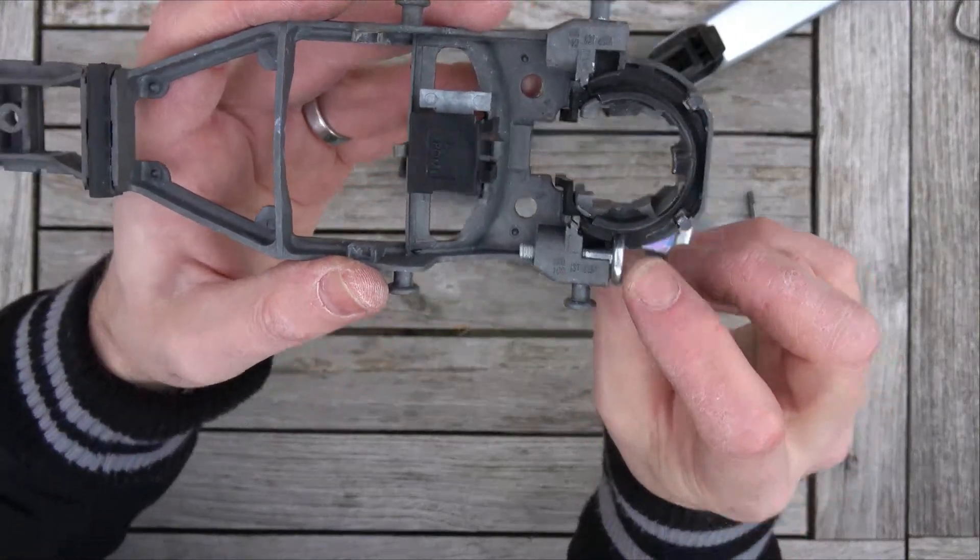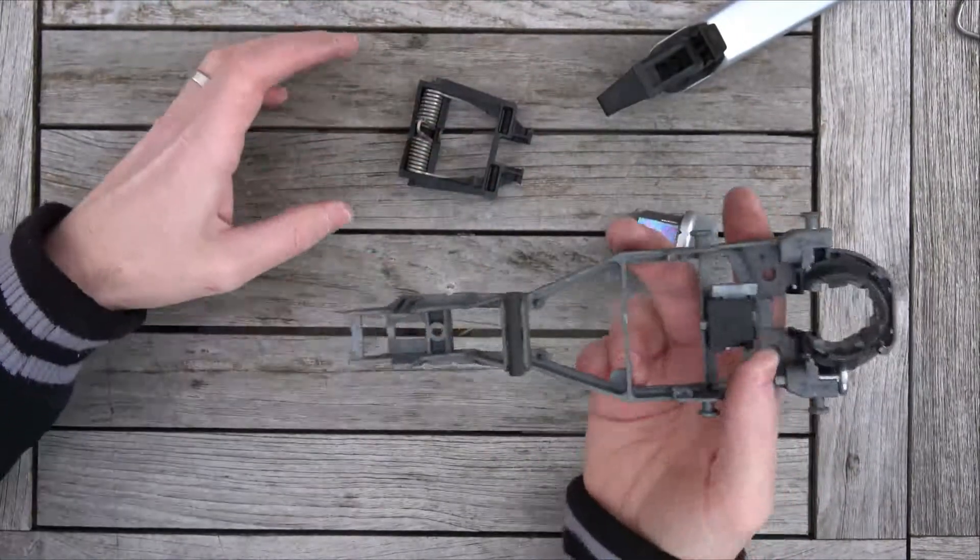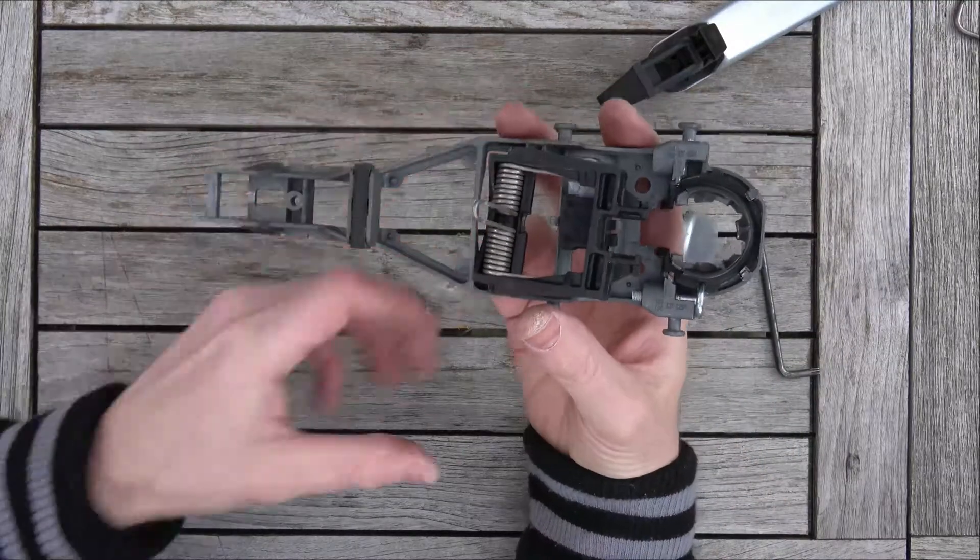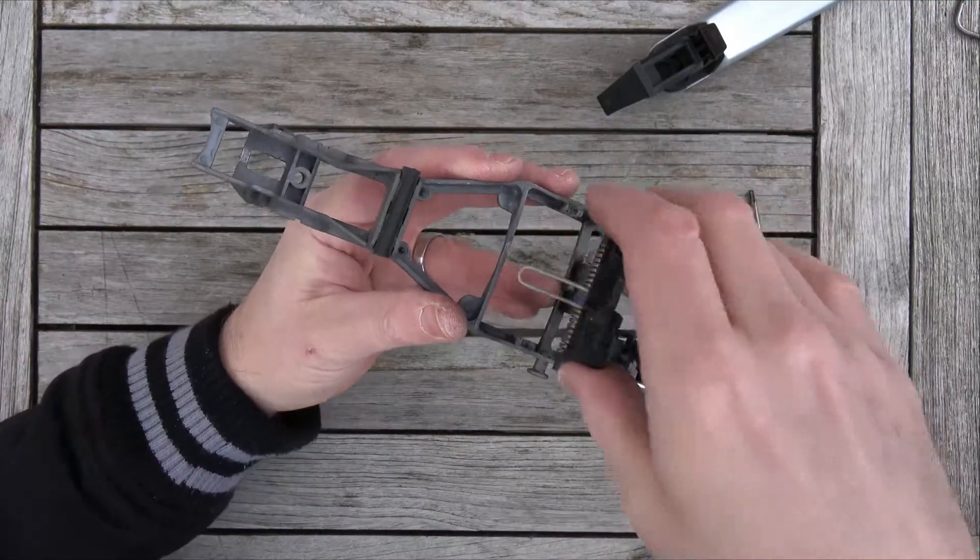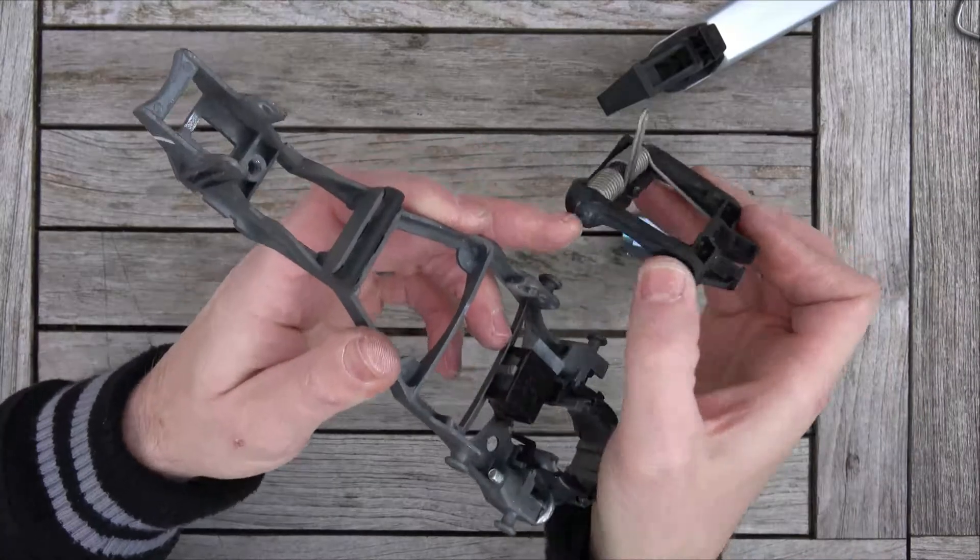That groove is in that part there, so that's that bit done. Now what we're going to do is get this bit and put the spring part in that bit first, and then these two bits locate in these parts here.